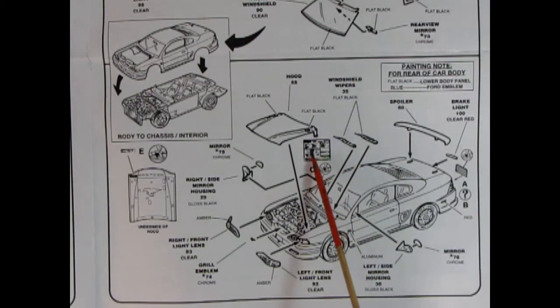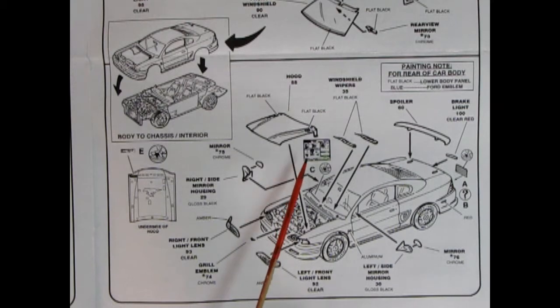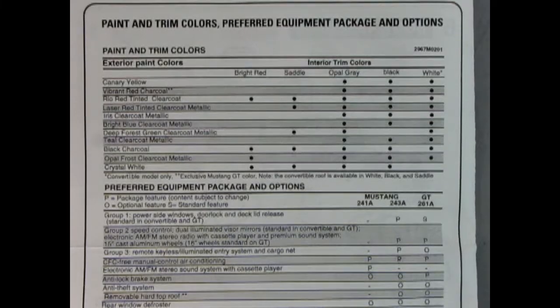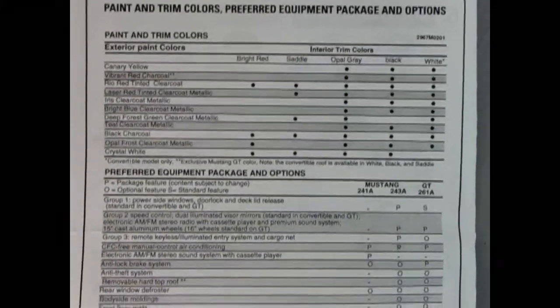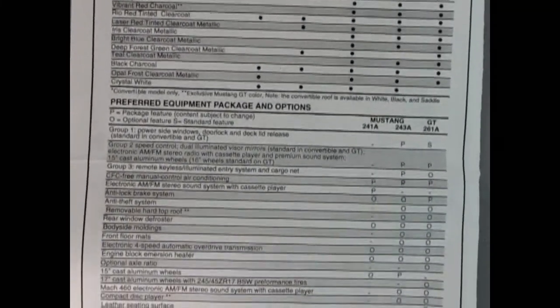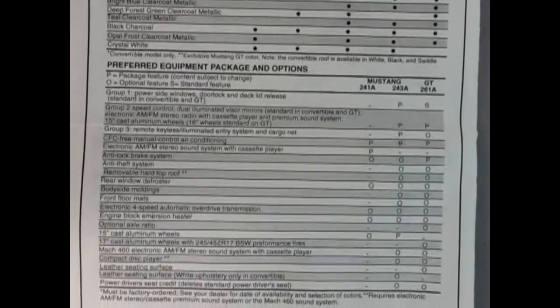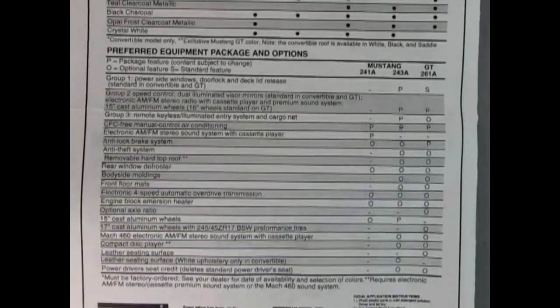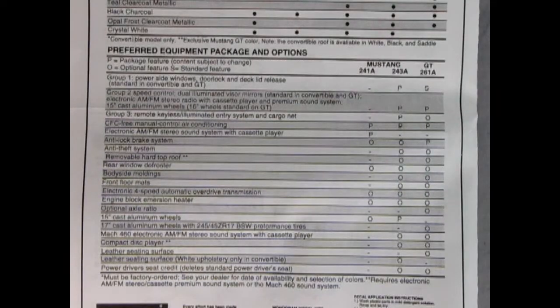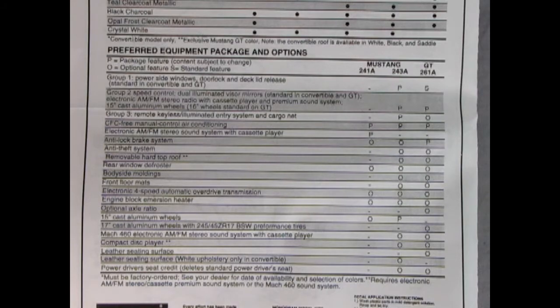We also have this nice decal here which is a spec sheet for selling the car you can put in one of the side windows. And off the back we have a complete trim and paint color chart as well as down here where you can see the preferred equipment package and options. So now we'll just go over to Trevor and he can show us all those cool model car parts.